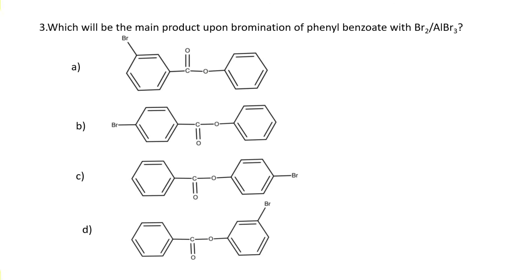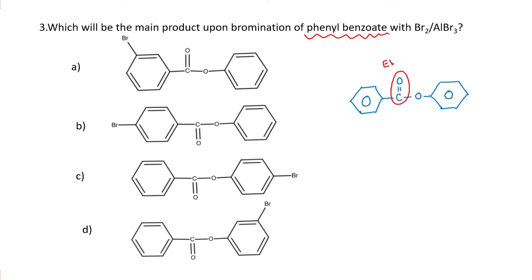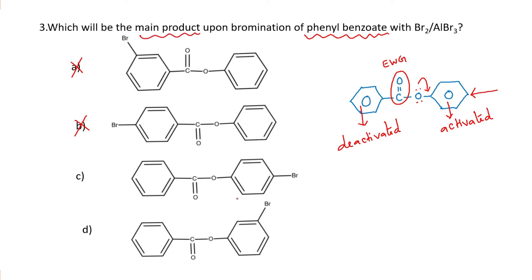Question number three: what will be the main product upon bromination of phenylbenzoate with bromine and AlBr3? In phenylbenzoate, one ring is attached to a carbonyl group (CO), which is electron withdrawing in nature, so that ring is deactivated towards aromatic electrophilic substitution — we can rule out options A and B. The other ring is attached with oxygen which contains a lone pair, activating it towards electrophilic substitution at ortho and para positions. Since the ortho position is sterically hindered, we get the para product as the major product, so option C is the right answer.